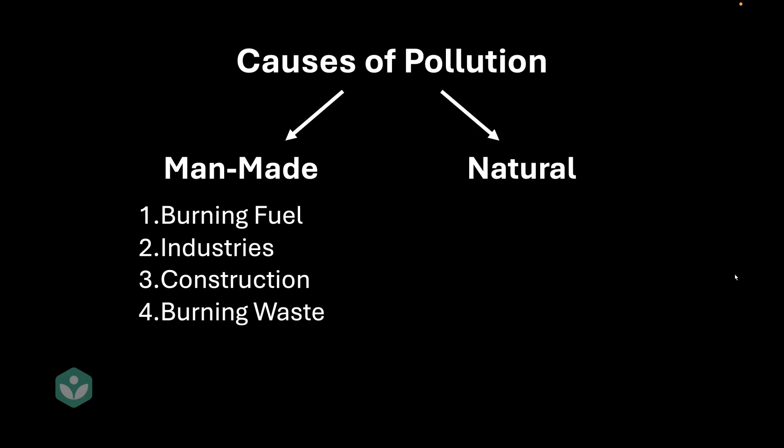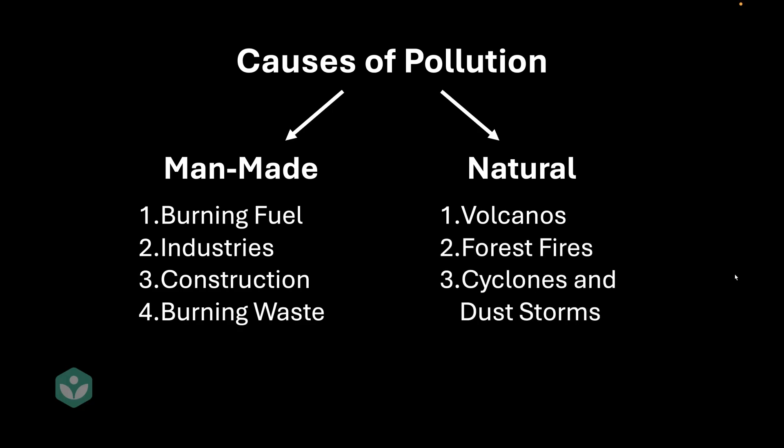Burning waste is another major source of air pollution. Moving to the natural sources of pollution, volcanoes could be a large source because they emit a lot of gases into the atmosphere. Forest fires are a source of pollution. Cyclones, dust storms, and earthquakes are a cause of air pollution. When earthquakes happen, sometimes poisonous fumes from within the earth come out and enter the atmosphere. Even microorganisms released into the atmosphere cause air pollution.